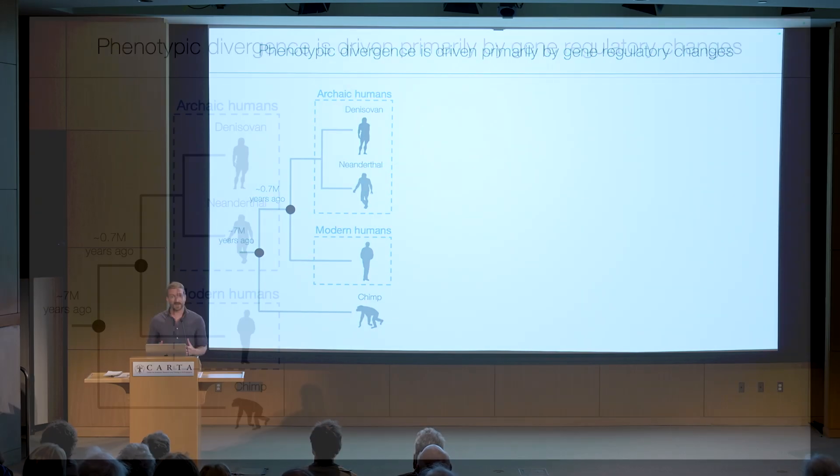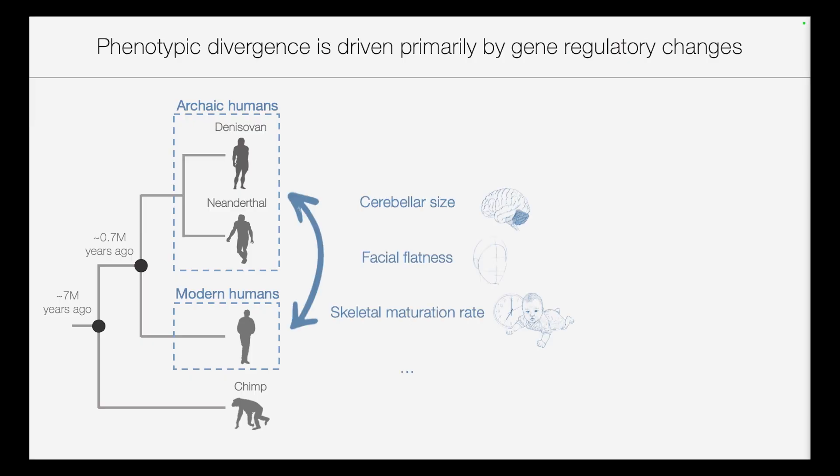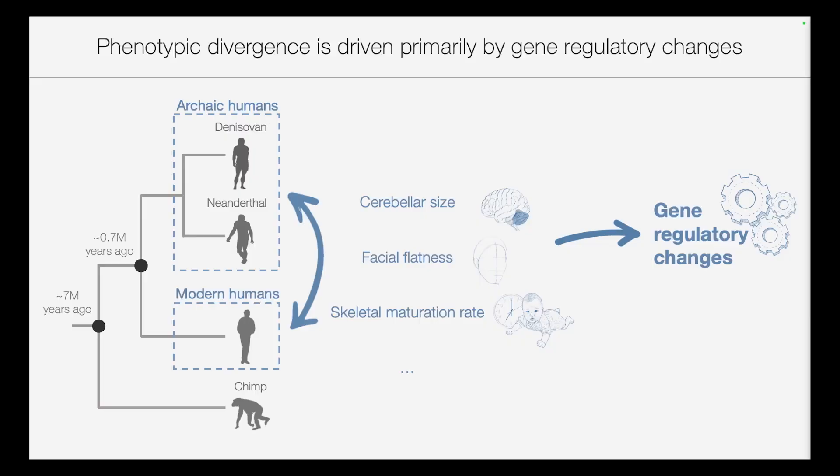The ancestors of archaic and modern humans split over half a million years ago. And since these lineages started evolving in separate paths, they have accumulated many phenotypic differences, including changes to the size of the cerebellum, the flatness of the face, our skeletal maturation rate, and many more. Today it is generally agreed that most phenotypic differences between closely related organisms are driven by gene regulatory changes — meaning when, where, and to what extent a gene is expressed.